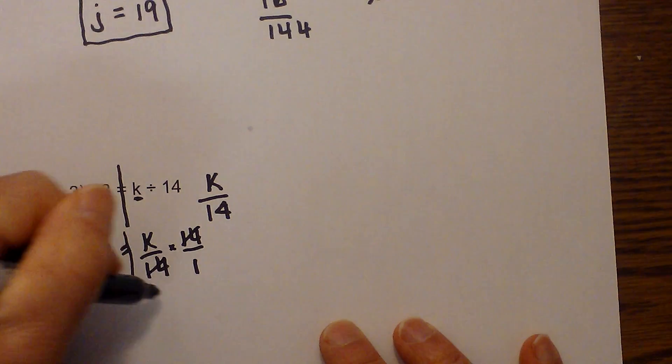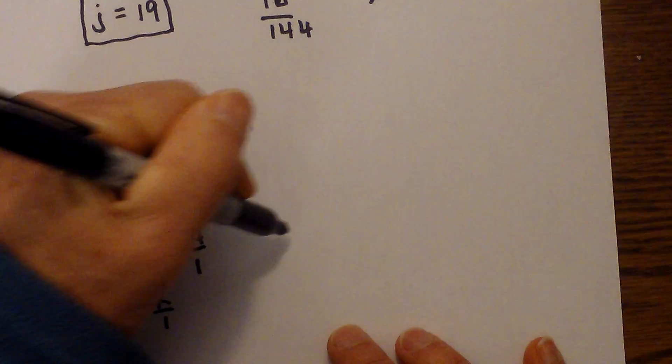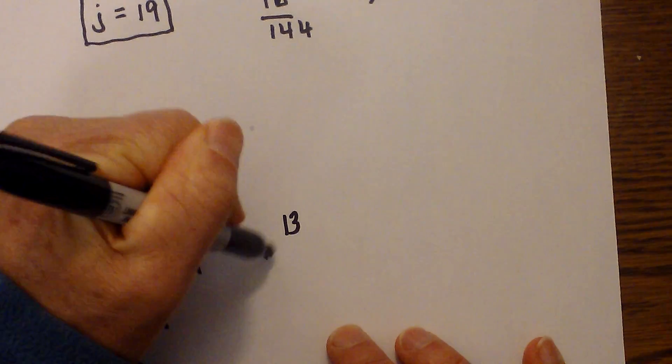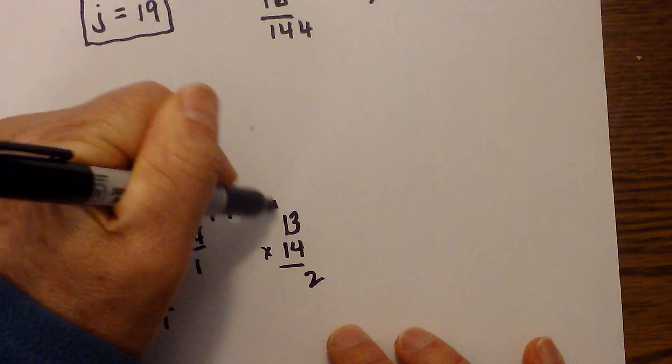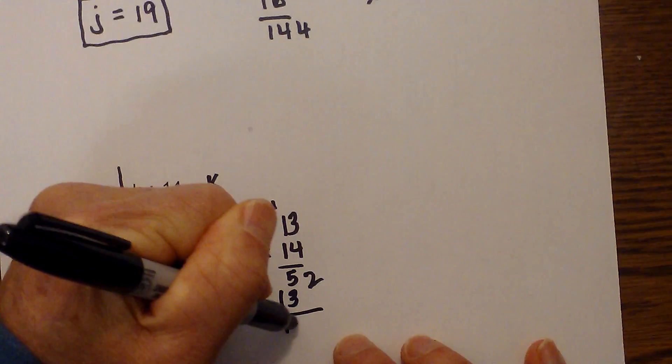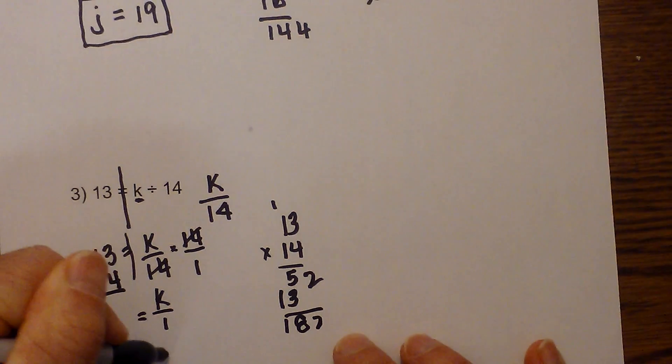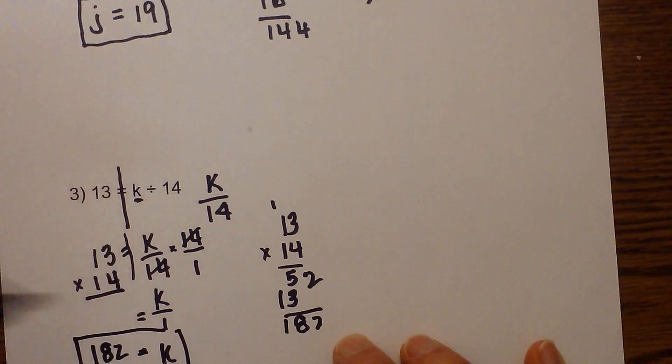These cancel so I get k over 1 is equal to, and 13 times 14, let's move this over here, is 4 times 3 is 12, that is 52, 13, that equals 182. So the answer becomes k is equal to 182 and I'll box it.